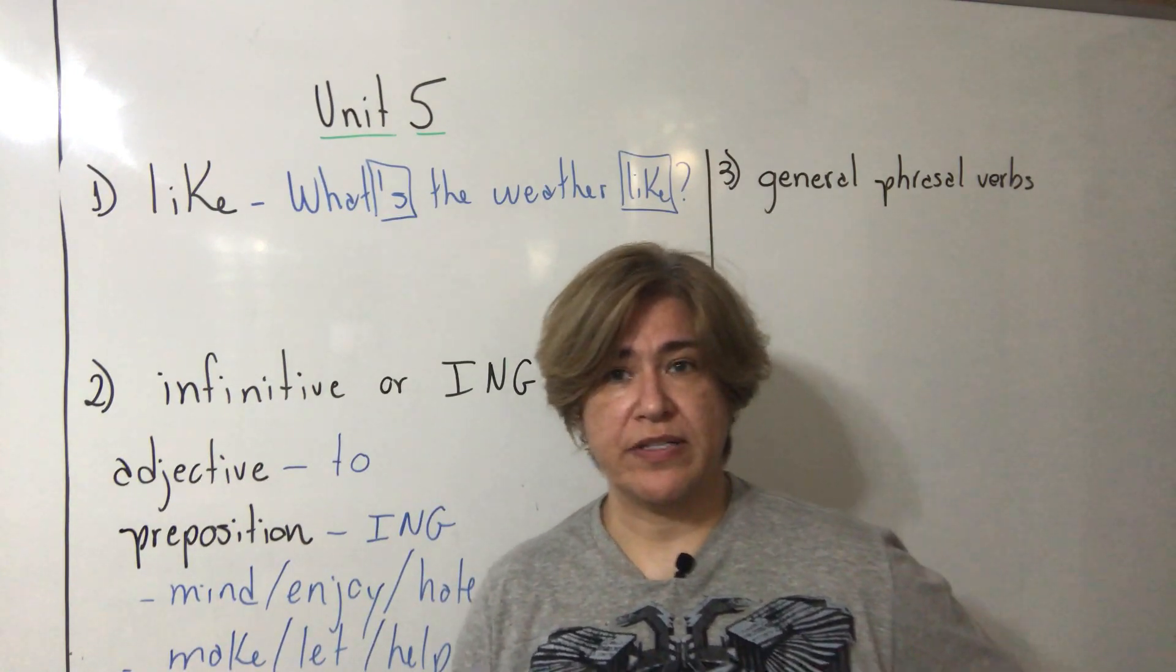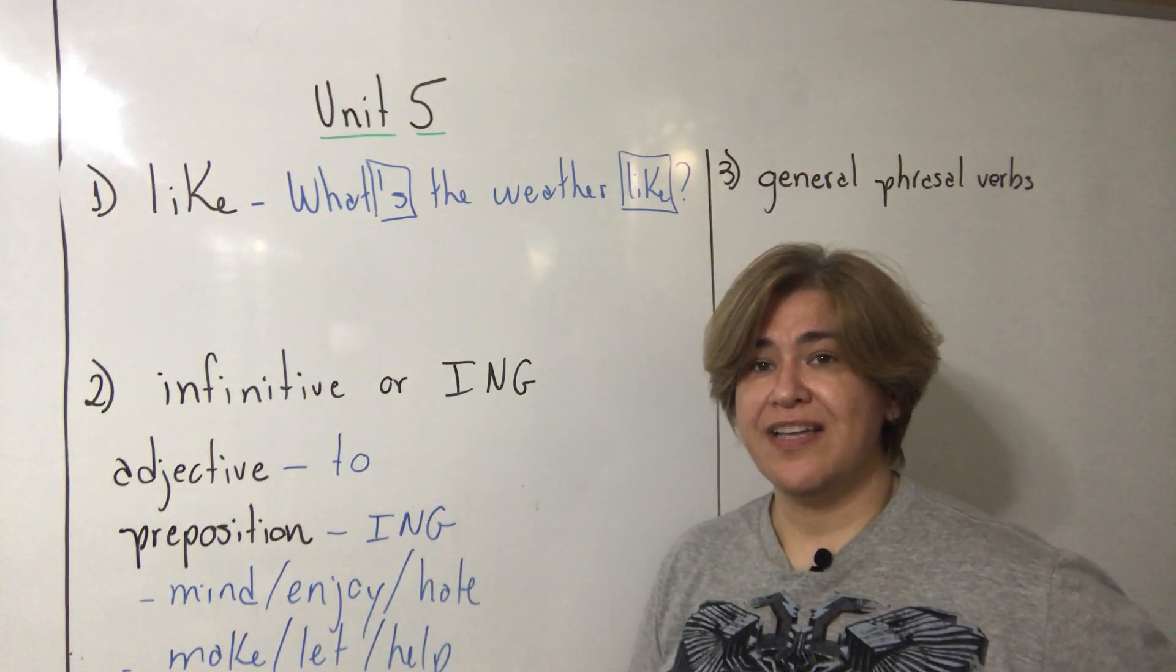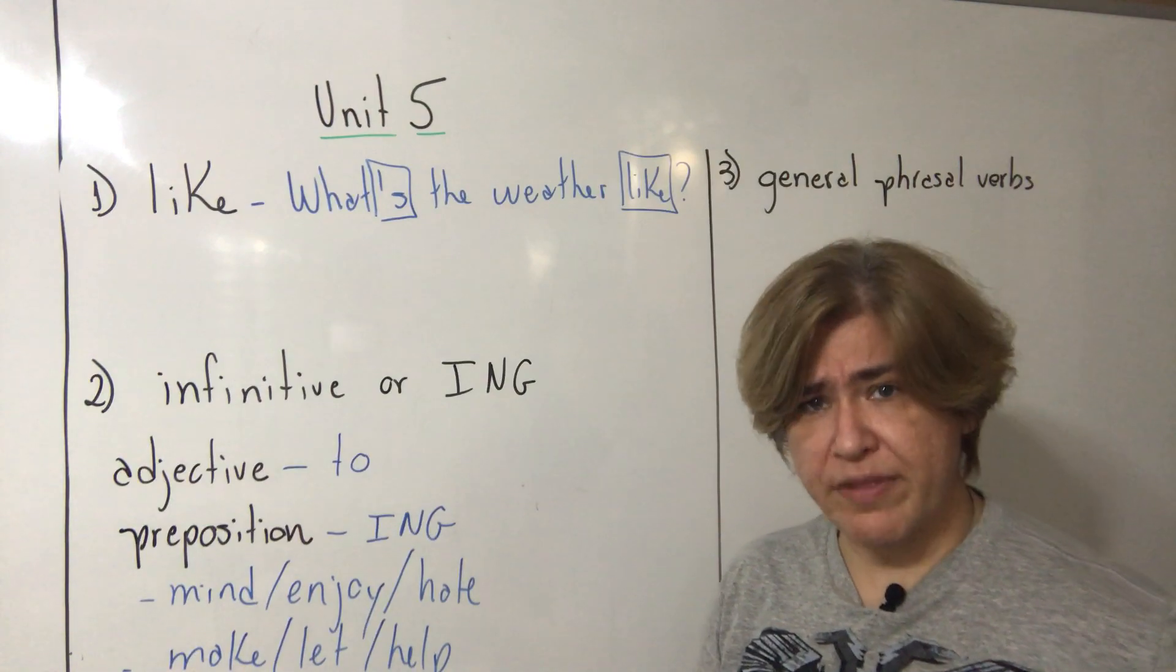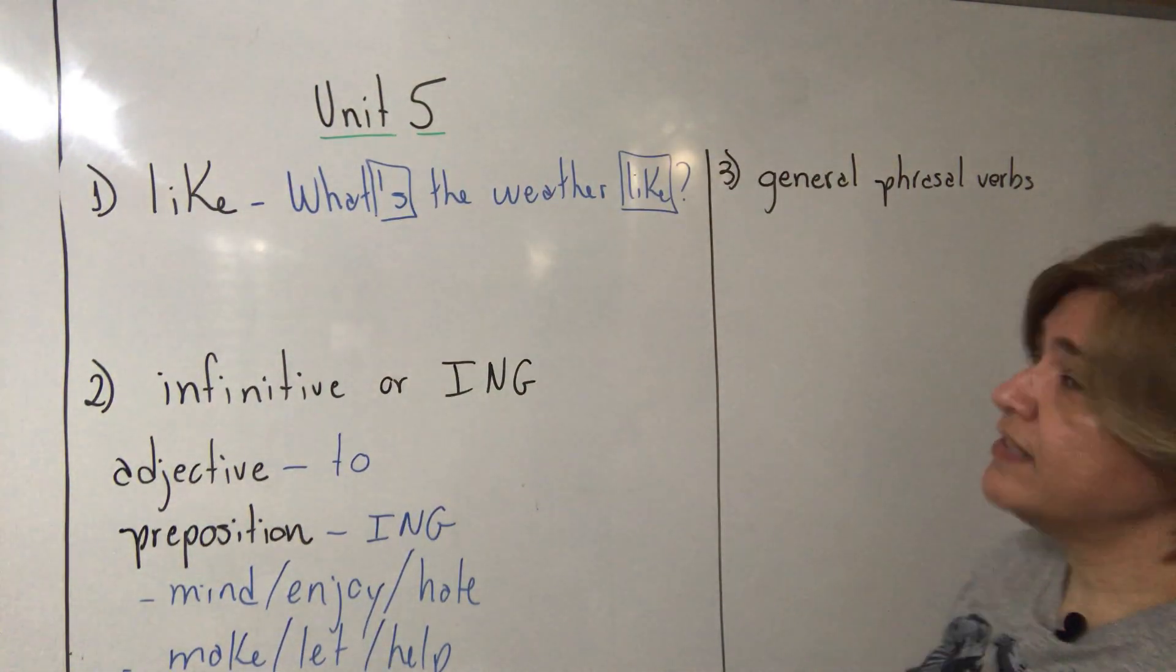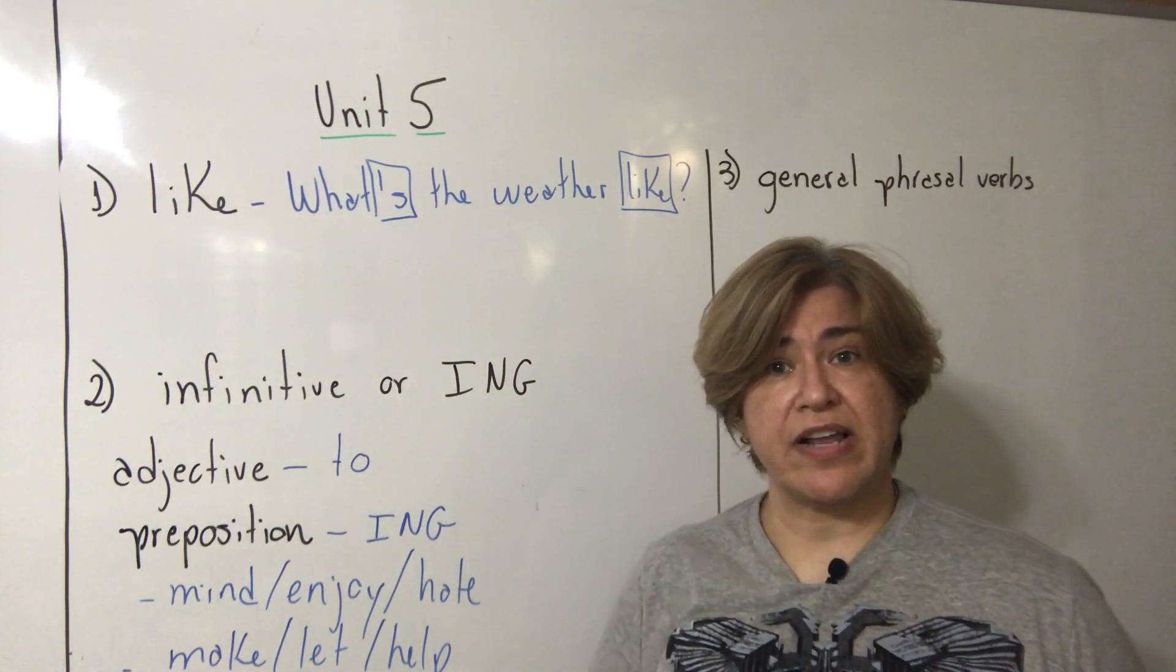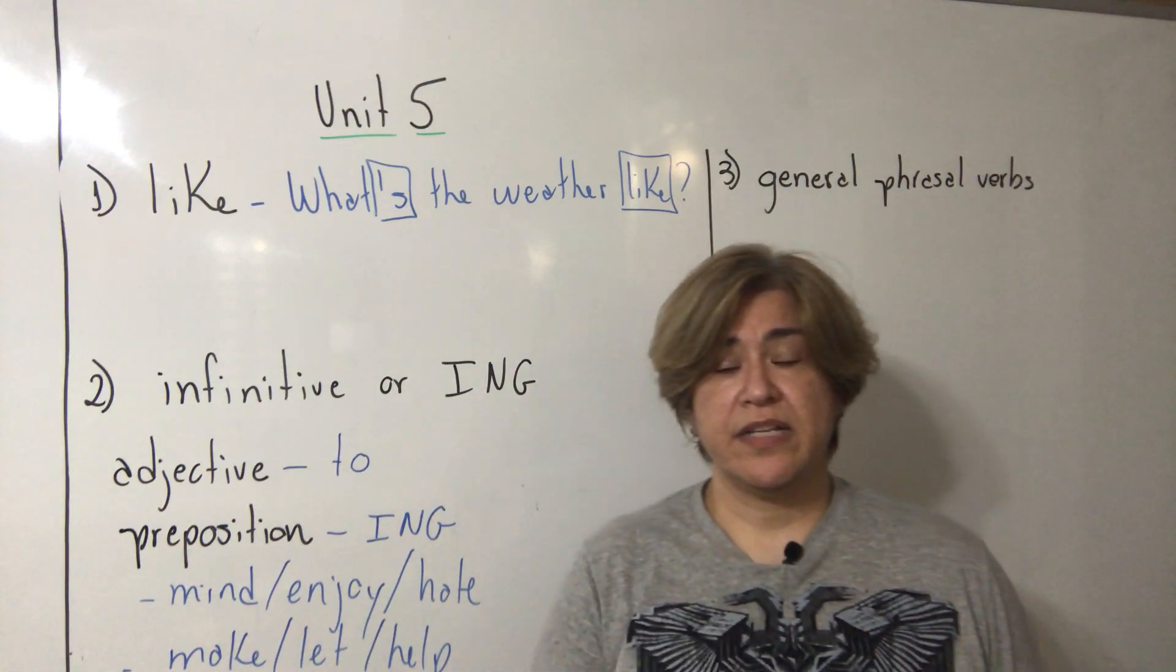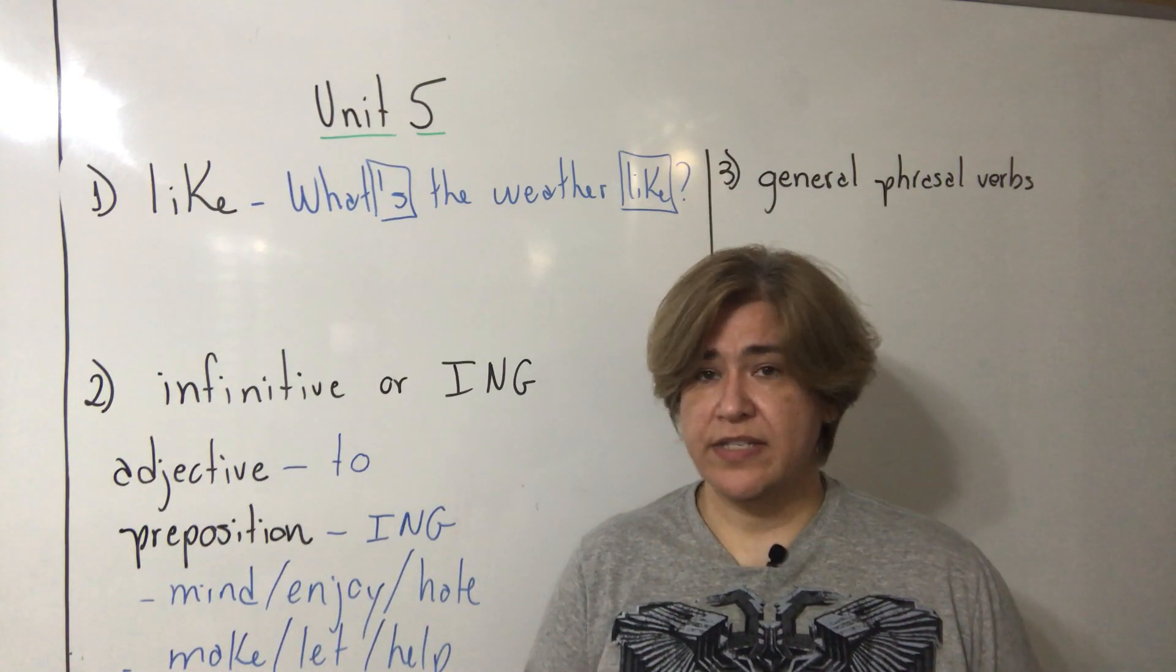And the typical verbs that go with 'to': decide to, want to. But you have to go through the list. It's not hard students, it's not hard. You will survive, I promise you. Finally, the phrasal verbs. In this lesson I generalized the cases. I didn't go for the verb. In lessons two, three, four I went for a verb: come, get, and go.